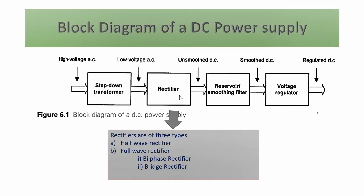In a half-way rectifier there is only one diode, so the circuit is simple, but efficiency is just 40%. Since the efficiency is low, the ripple is more. The expected output of a rectifier is DC — it converts AC to DC — but there will be a ripple, meaning an unwanted AC component in the output. So in a half-way rectifier, the AC component ripple is more.